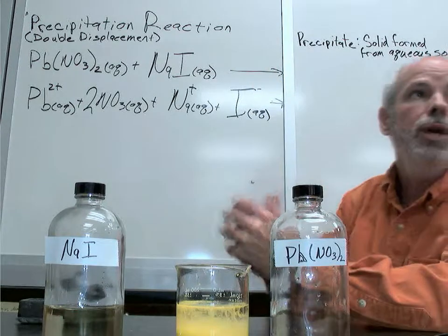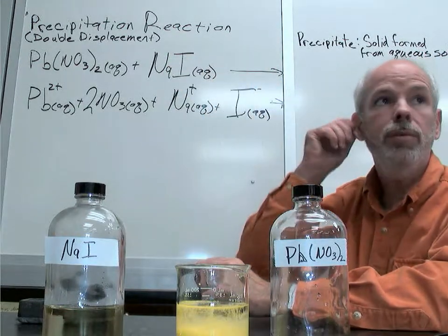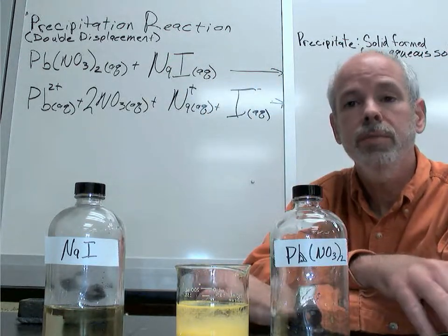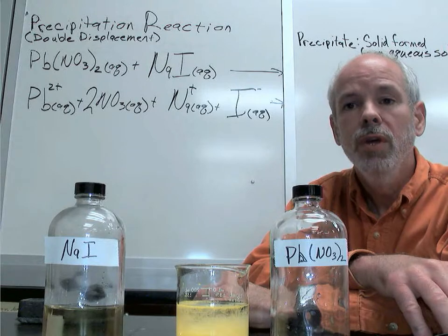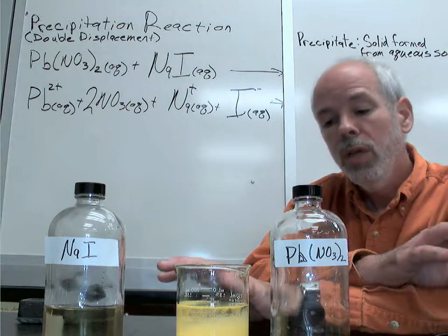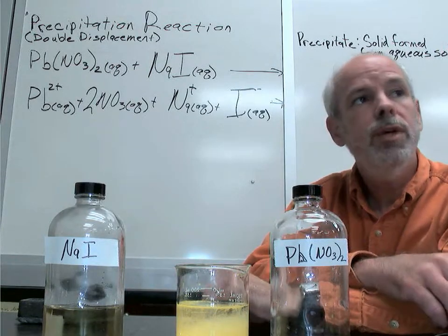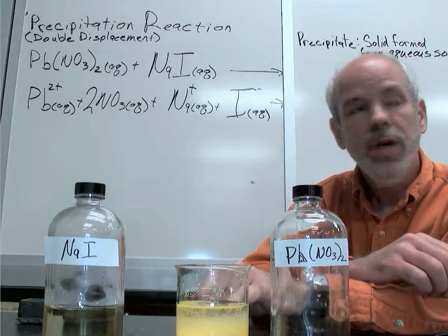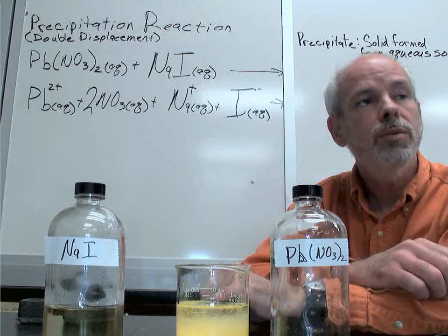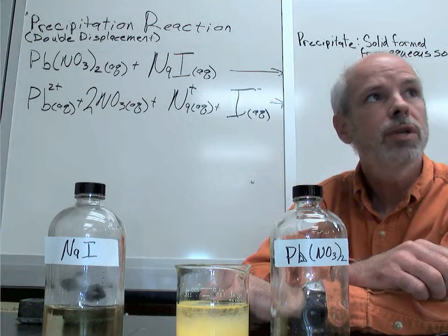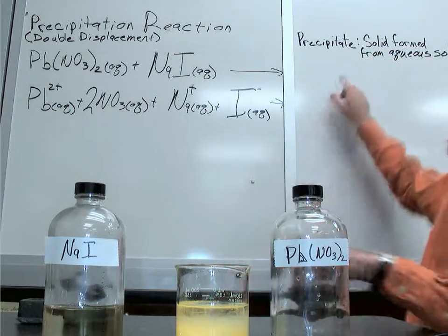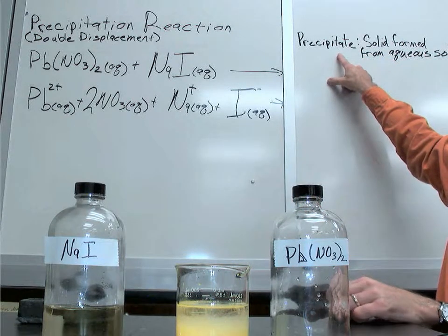A precipitation reaction is sometimes referred to as double displacement, at least in this case. And in the precipitation reaction, the solid that forms and looks murky is called the precipitate.